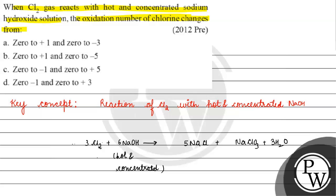हमारी reaction है Cl₂ की reaction किसके साथ? Sodium hydroxide के hot and concentrated form के साथ। अगर यहाँ पे बात करें chlorine की oxidation state क्या है? Zero है। अगर यहाँ पे बात करें NaCl की case में तो NaCl की case में chlorine की oxidation state